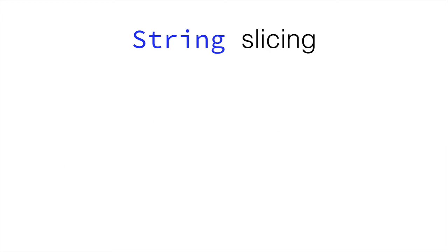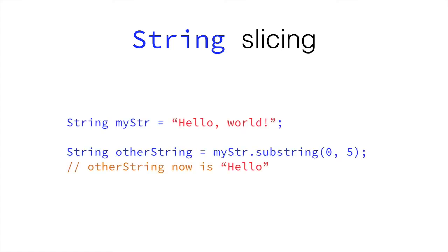String slicing is getting a part of a string, or a substring. And this is done very simply, like so. String myStr equals hello world. And then some other string equals a substring from myString, which we call by doing myStr dot substring. And then between the two brackets, we have the starting index and the end index.